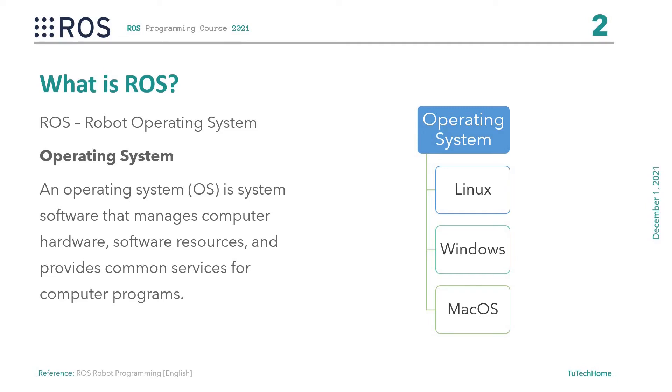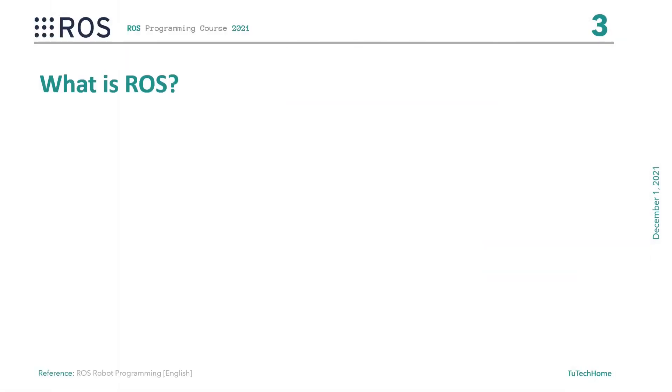These nodes communicate with each other to perform an individual task, like copying from one folder to another on Windows. Similarly, ROS also uses nodes to perform different tasks like navigation, mapping, and so on, which we will discuss in upcoming lectures.